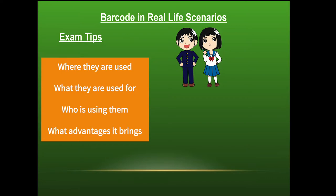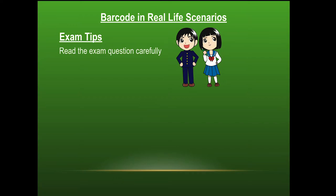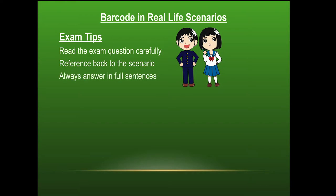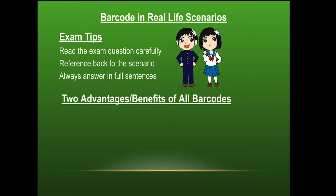As you're watching the video, think about these tips and remember you always need to read the exam question very carefully and specifically look at what the scenario is, because you need to reference back to it. If it's an airport, put it in terms of an airport passenger. If it's a supermarket, talk about either the customer or the owner of the business. That's how we pick up marks — answers must be in full sentences, referencing the scenario. If you're struggling, think about the two main advantages that apply to any type of barcode.